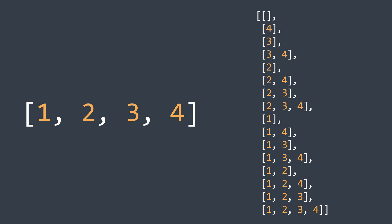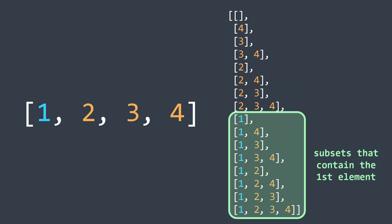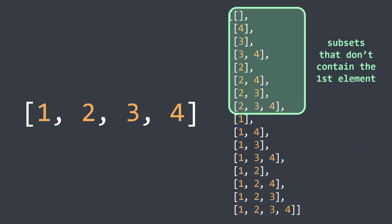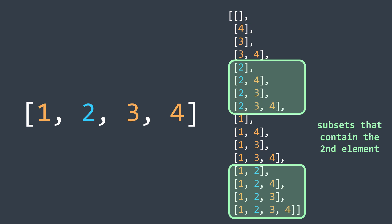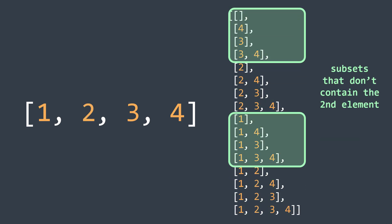For example, we will have subsets that contain the first element and subsets that don't. Same thing for the second element — we will have subsets that contain it and ones that don't, and so on for each element. To cover all the possibilities for each element, we recursively call the function twice: once by taking the element and once by not taking it.